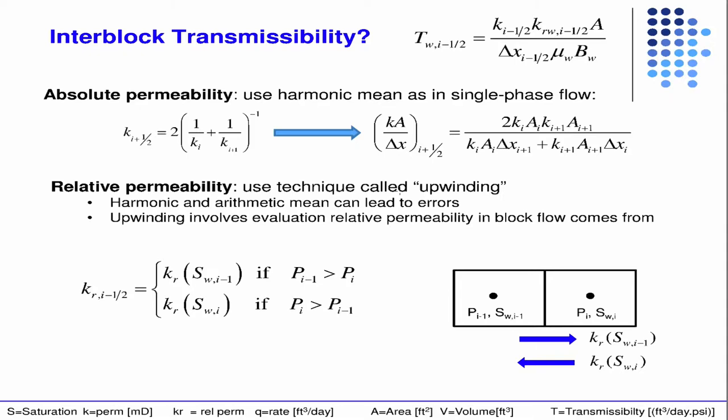So then back to the slides. We're upwinding, so those convective terms enter in through these relative permeabilities, so we want to upwind those. And upwinding, we have to do a check.